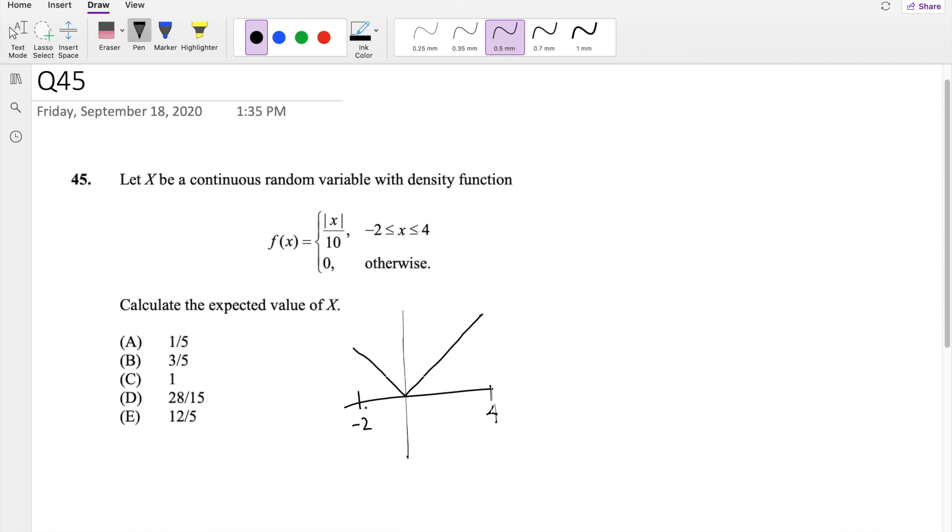So from negative 2 to 0, this function isn't just x, it's negative slope. So this function is actually going to be negative x over 10. And because we're asked to find the expectation of x, we have to multiply this by x dx.